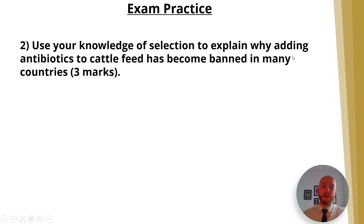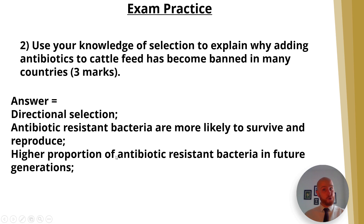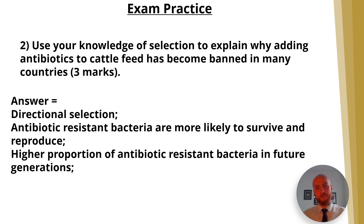Question two: use your knowledge of selection to explain why adding antibiotics to cattle feed has become banned in many countries. This is worth three marks. The answer: for one mark, this would lead to directional selection, meaning antibiotic-resistant bacteria are more likely to survive and reproduce. For a second mark, a higher proportion of antibiotic-resistant bacteria would appear in future generations. For the final mark, antibiotics can't be used sustainably in cattle as it leads to resistant bacteria over time. The key was identifying the question asked you to apply knowledge of selection — specifically directional selection.